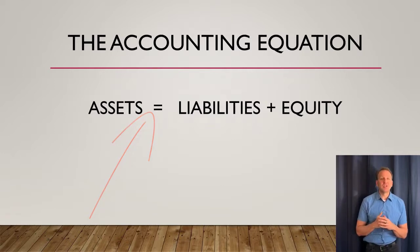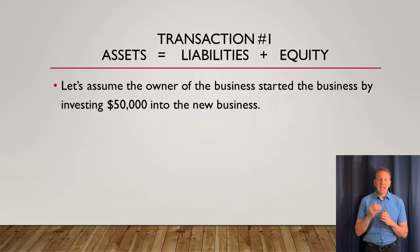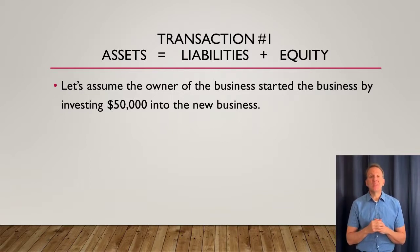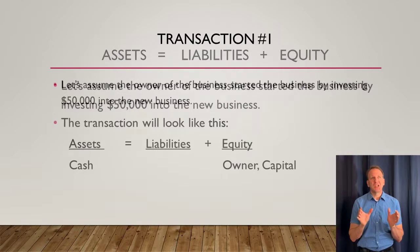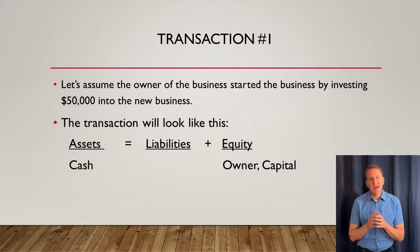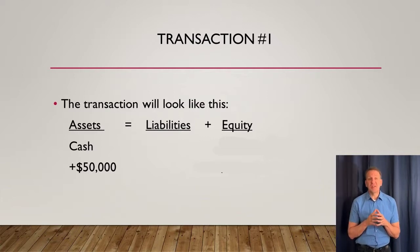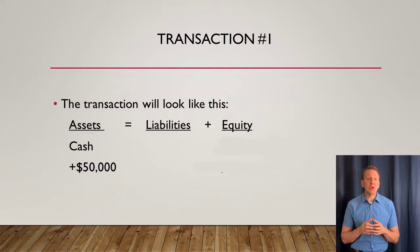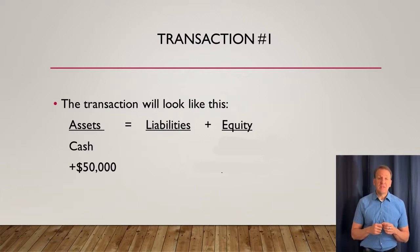Let's look at our very first transaction. We have an owner — using an example of a sole proprietorship — who is putting $50,000 into his brand new business. When the owner puts this $50,000 into the business, the business is getting $50,000 of cash. Cash is an asset, so assets have now increased by $50,000. That's the left side of our accounting equation, which has now increased by $50,000.